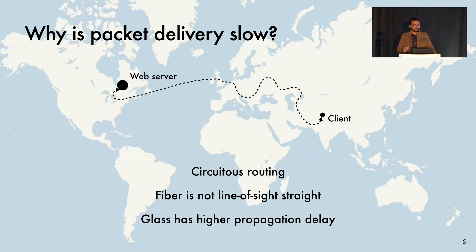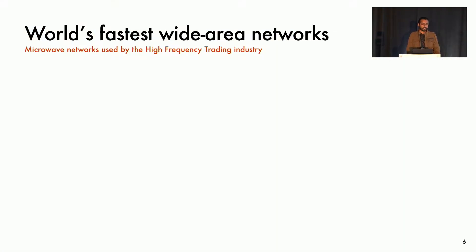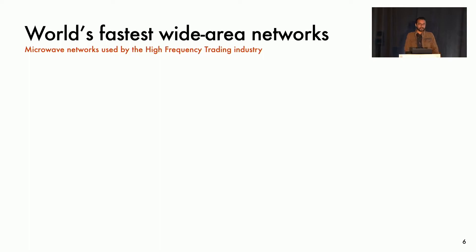So what is line of sight and does not slow down light? That's wireless. In fact, wireless networks make up the world's fastest wide area networks today. The high-frequency trading, or HFT industry, has deployed microwave networks and made them faster and faster over the years. This is why you will hear about HFT in this talk more than you probably want to.